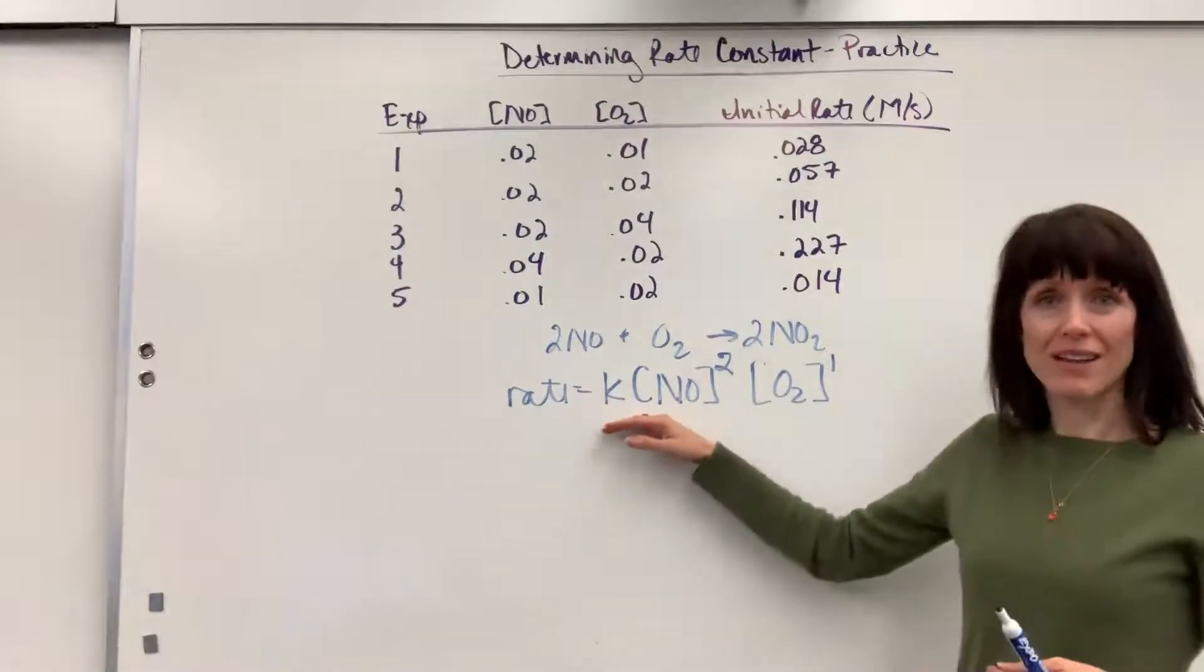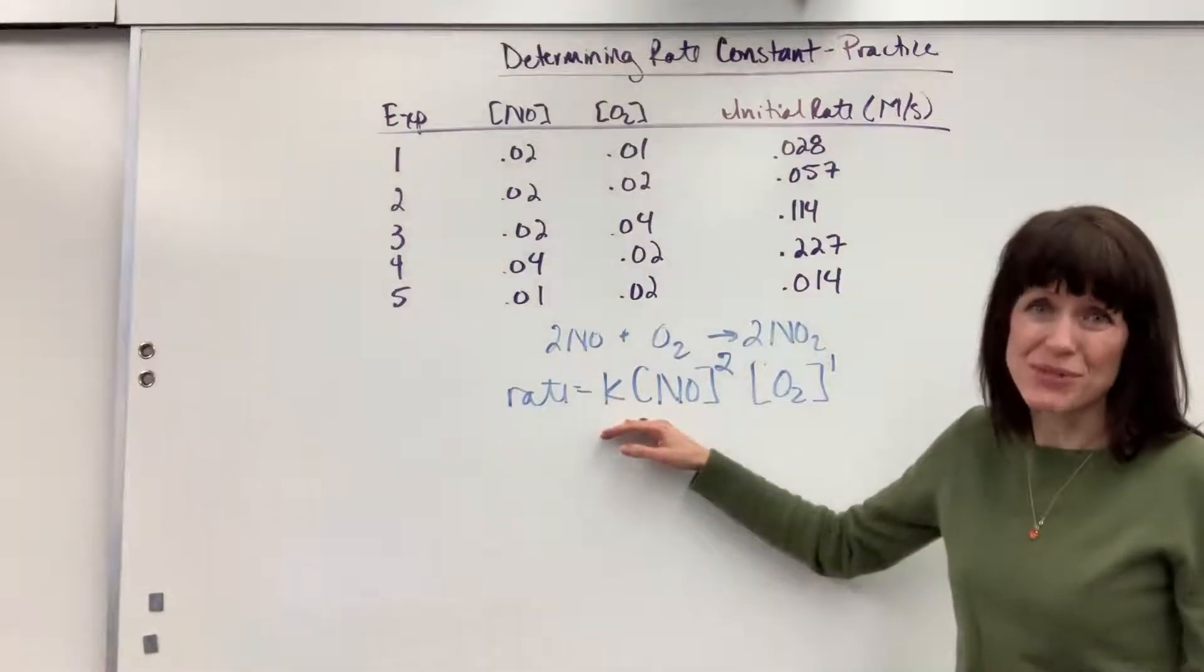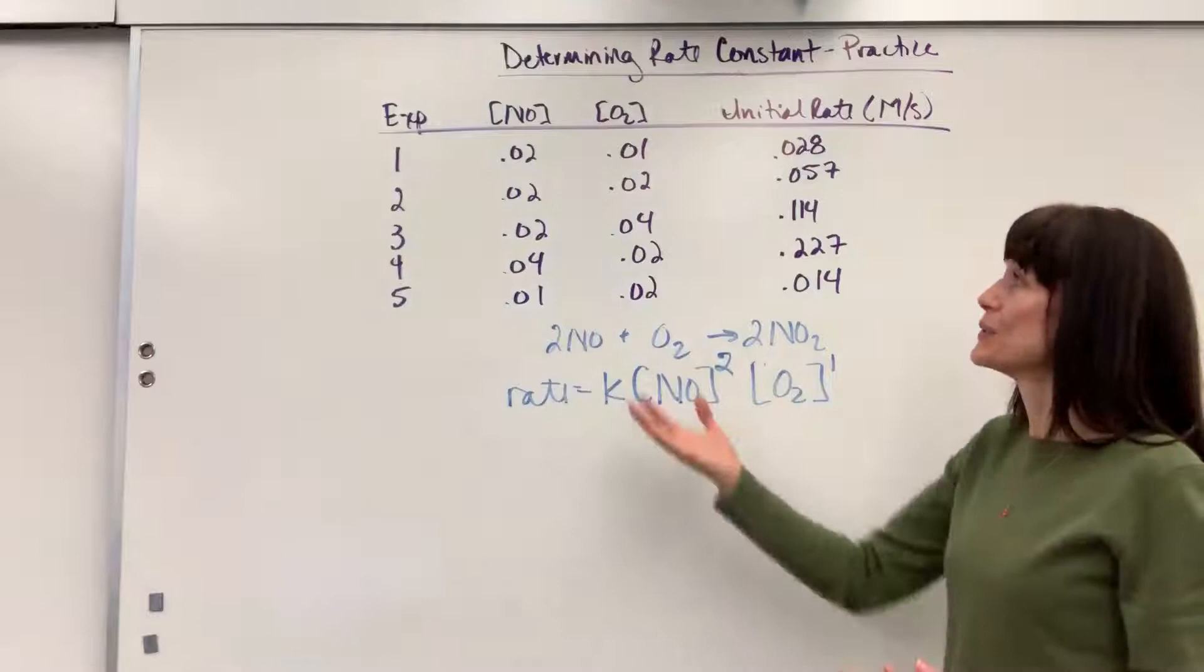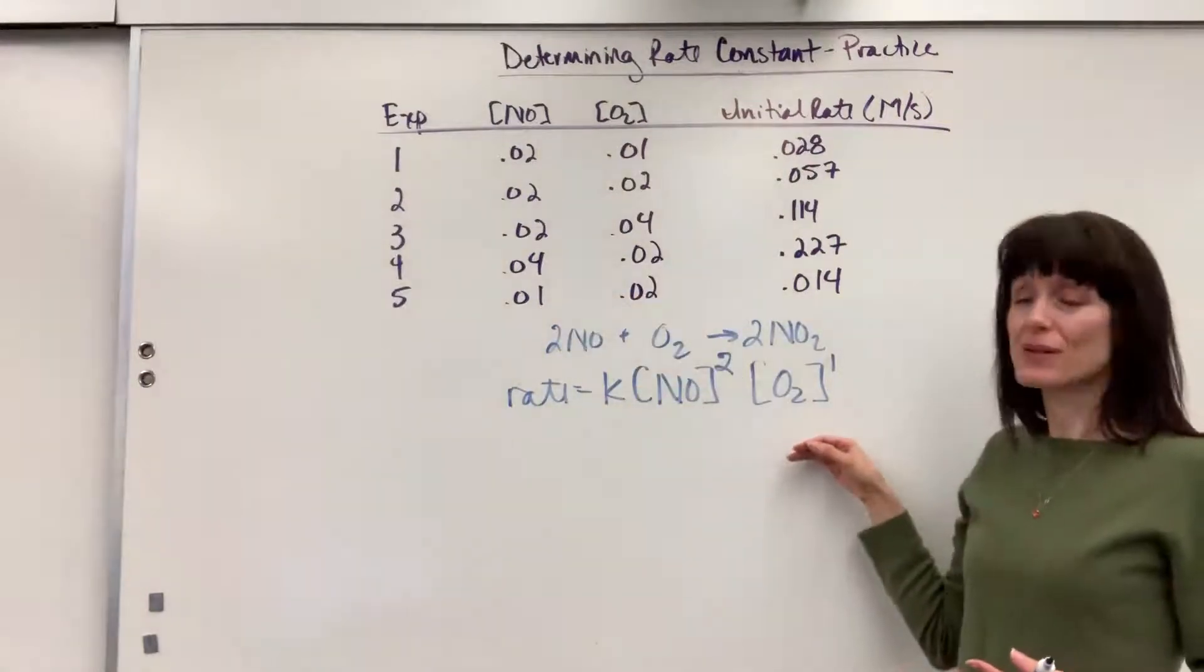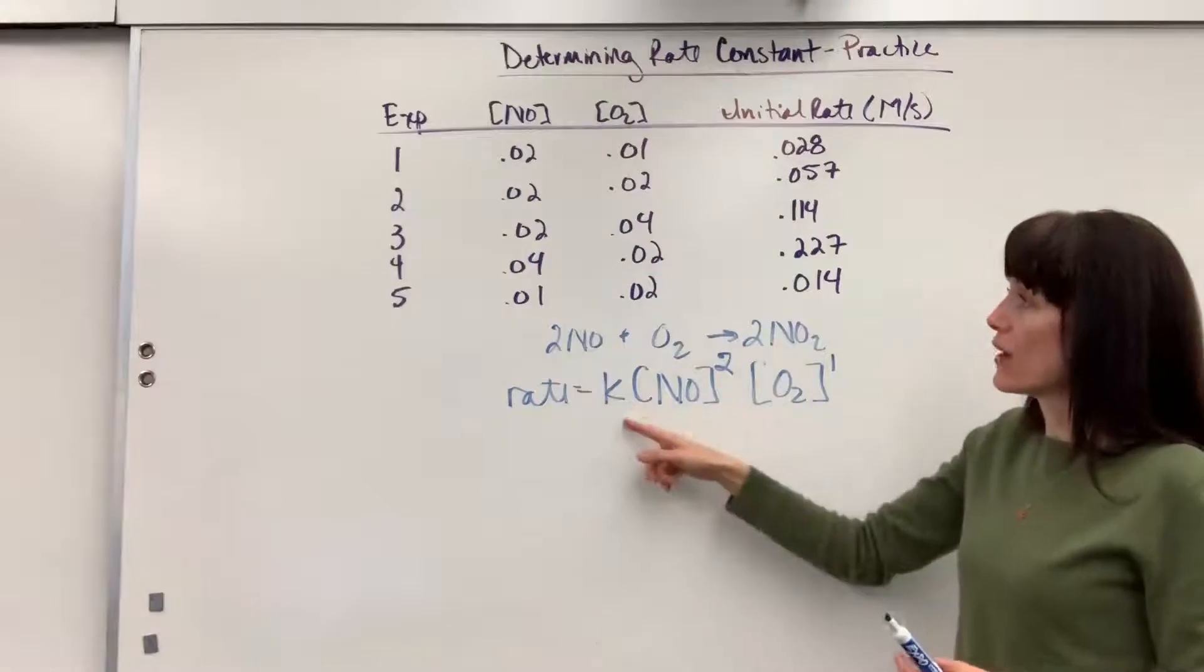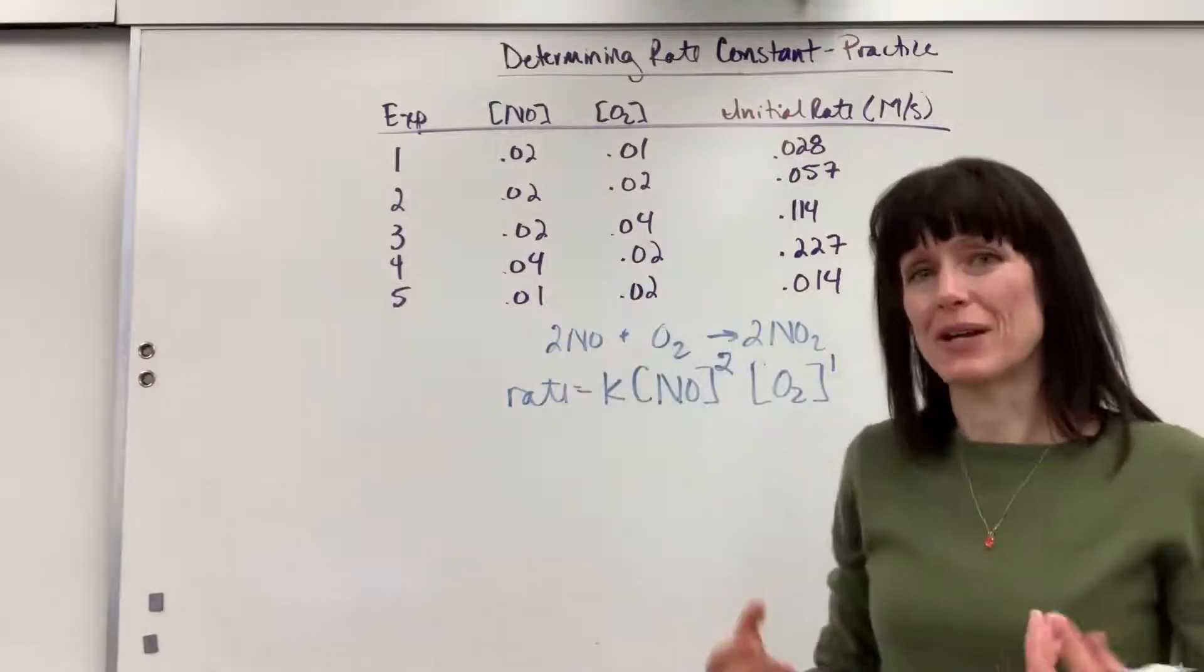So once you find the rate law, finding rate constant is really easy. All you have to do is pick one of the experiments and plug it in. Take one of those trials and plug it in. The K value will be the same for all of them, doesn't matter which one you choose.